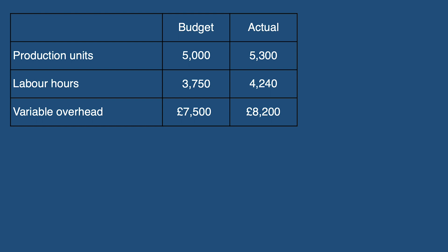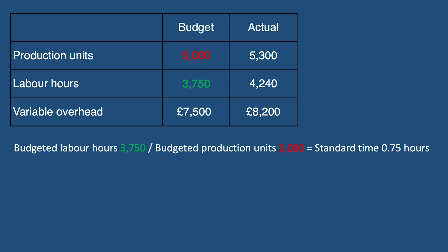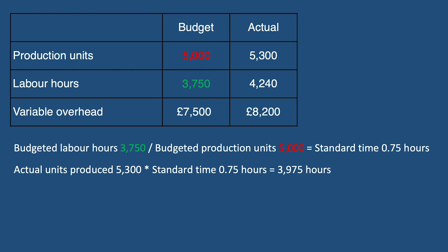We first need to determine the standard amount of time used to produce one unit. This will be calculated by dividing the budgeted hours of 3,750 by the budgeted production units of 5,000. The standard time to produce a unit is therefore 0.75 of an hour, i.e. 45 minutes. We then apply this to the actual production — we actually produced 5,300 units, so if we multiply this by our expected hours per unit of 0.75, this gives us the amount of time in hours that should have been used, which in this case would be 3,975 hours.